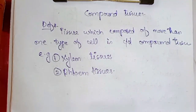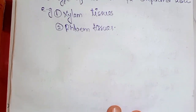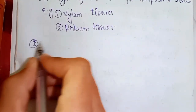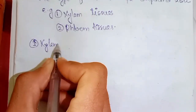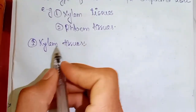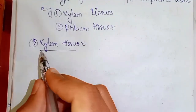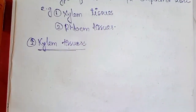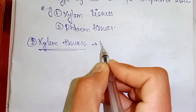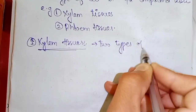Take a look — xylem tissues and phloem tissues. Xylem tissues are basically composed of two types of cells. They are composed of two types of cells.